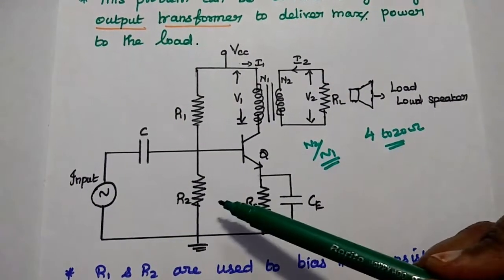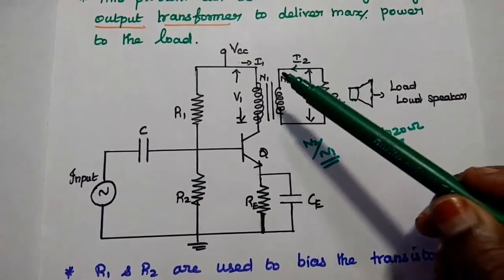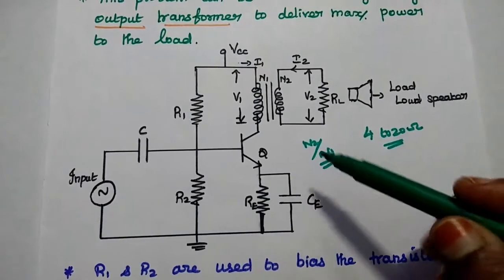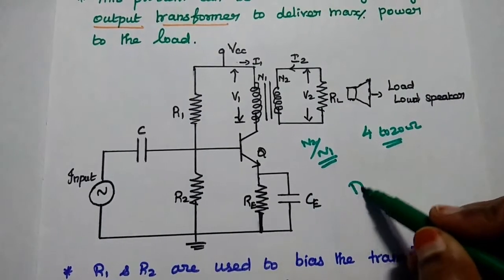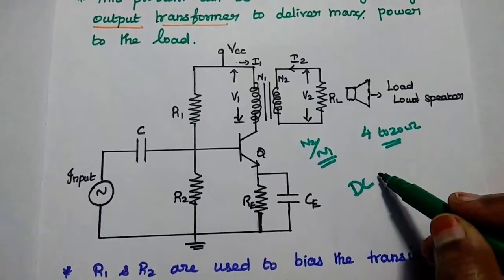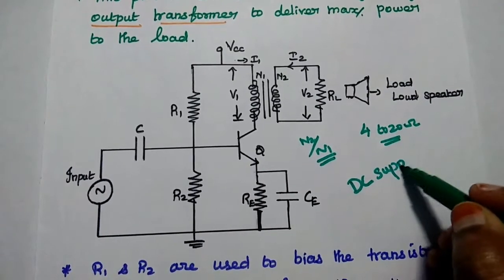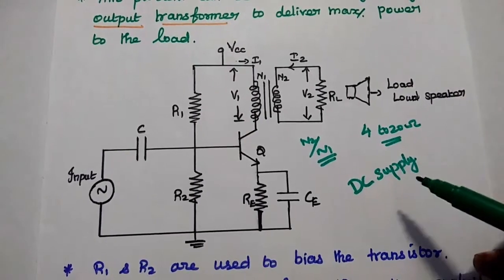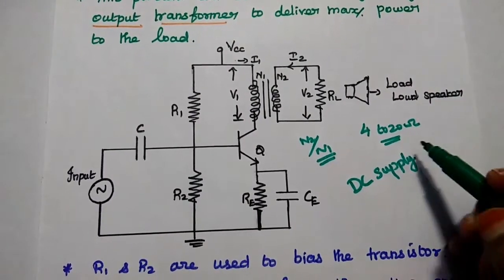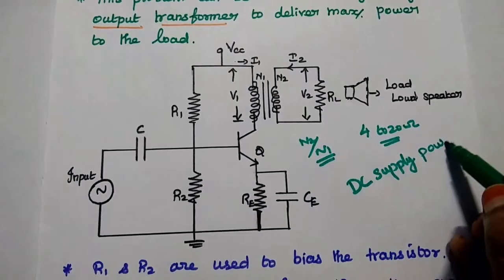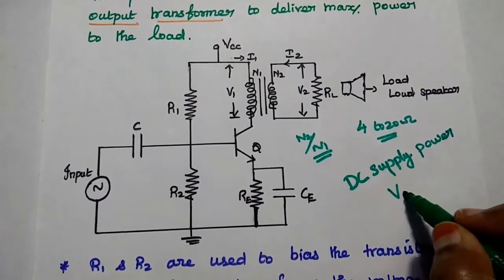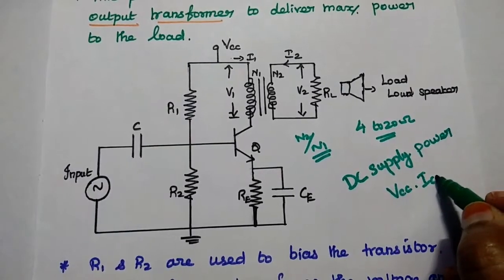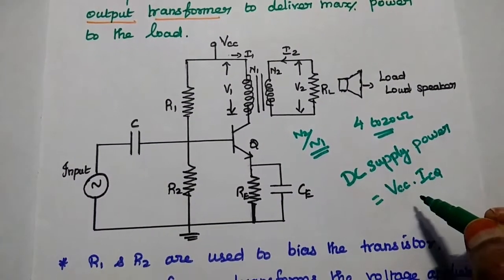Without any input signal, if you are going to give only the supply voltage, then the transistor is driven only by the supply voltage. At that time, it can produce DC supply power. Without any input signal, giving only the supply voltage produces DC supply power. That is depending on the VCC value and the current drawn in the collector side. This is called DC power.